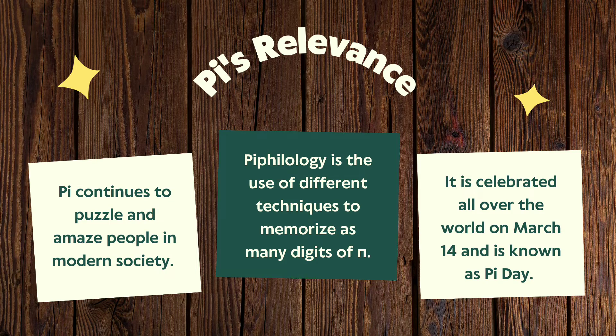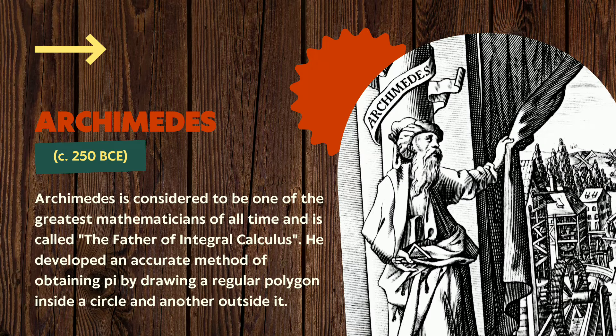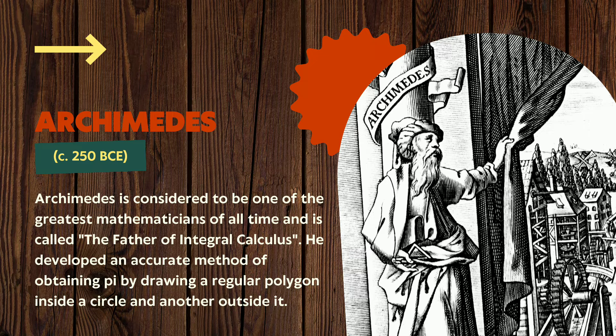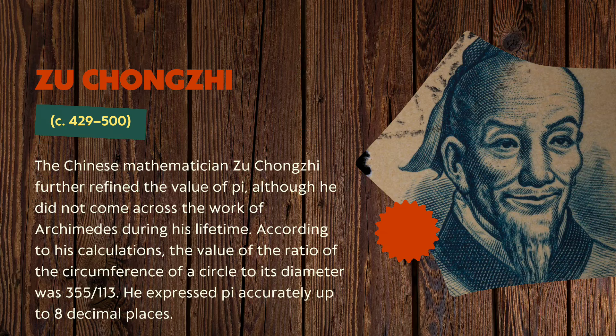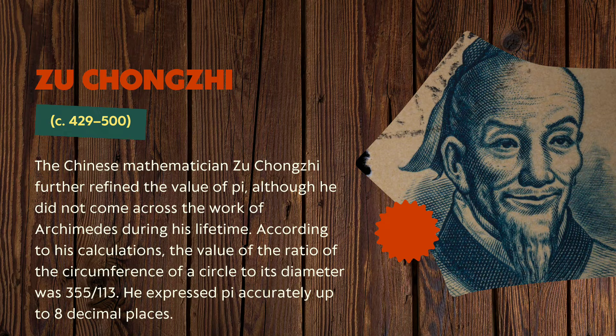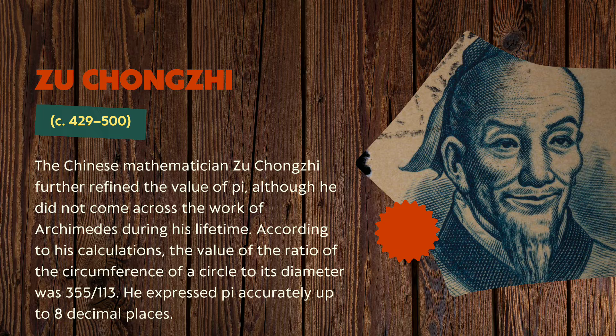Let's take a look at the history of pi, starting from Archimedes, who is known as the father of integral calculus. He developed an accurate method of obtaining pi by drawing a regular polygon inside a circle and another outside it. He also calculated pi up to eight decimal places.